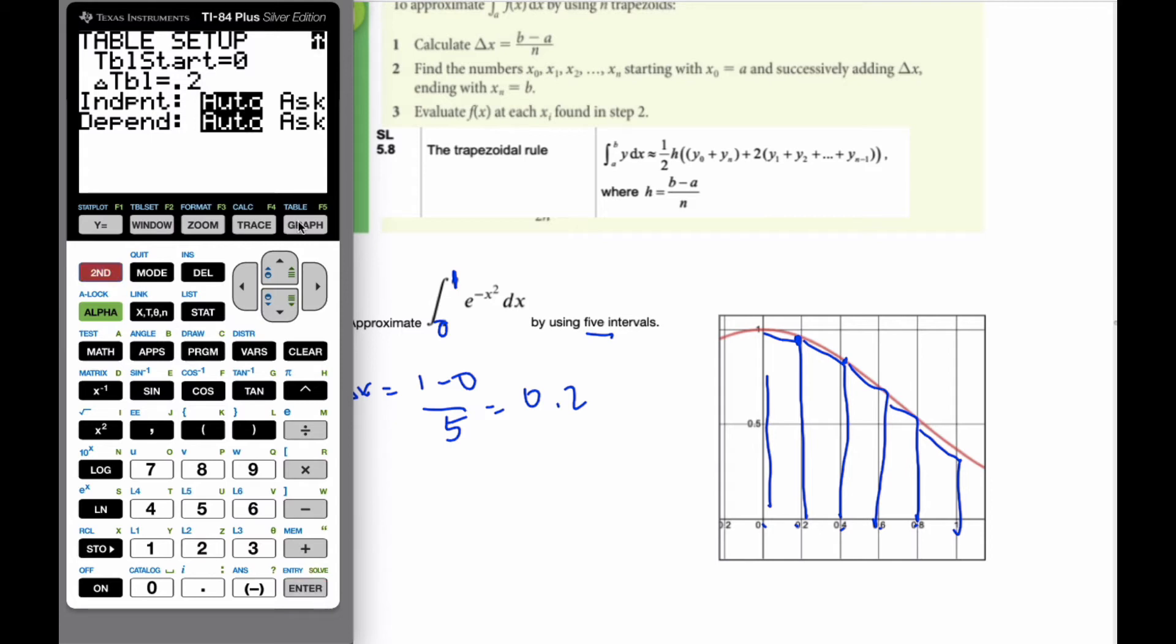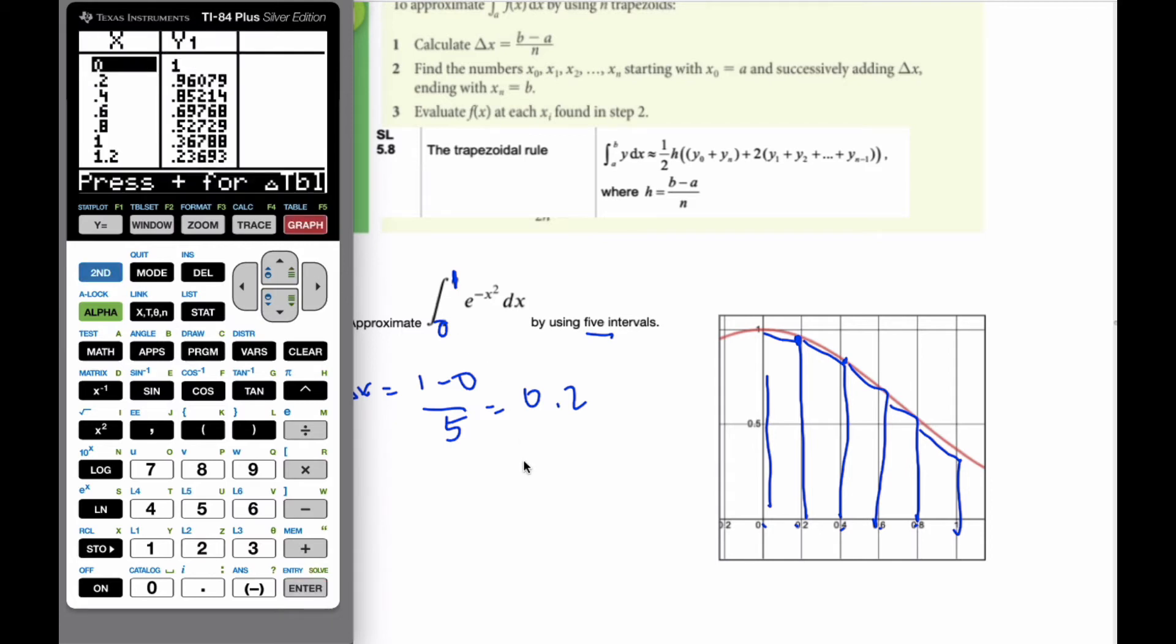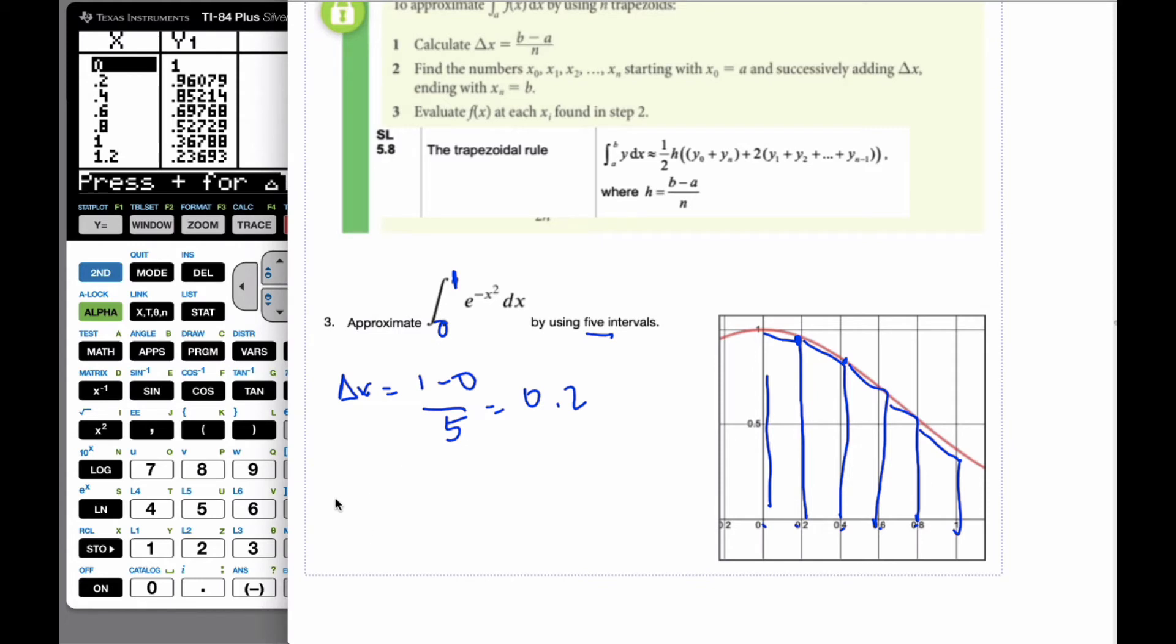And then I'm going to go and see what my values are. And so now if I'm going to set up my integral, my approximate area of my integral is going to be equal to one-half. The height is going to be this calculation here, which I know is 0.2. That's the height of all these trapezoids, and I know the bases are perpendicular to the height.